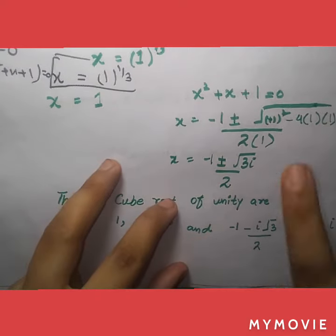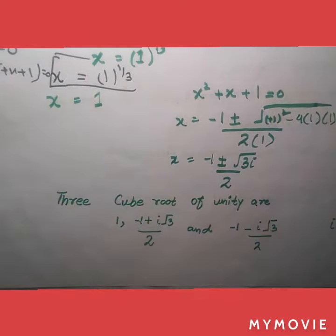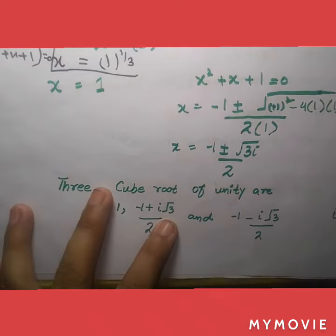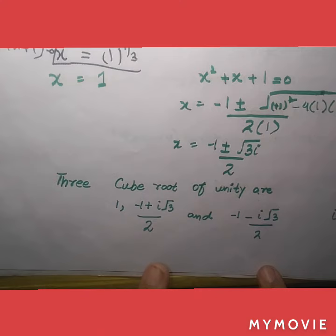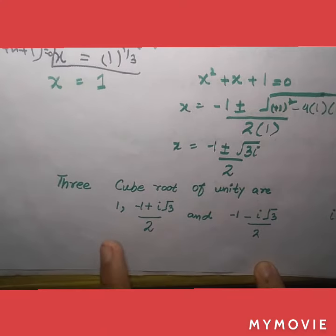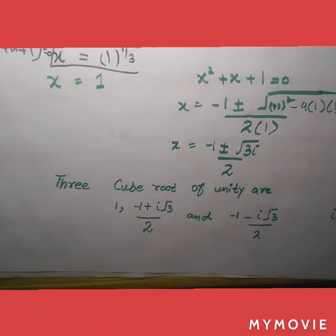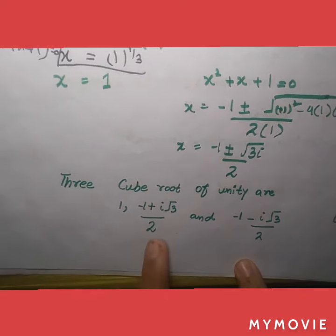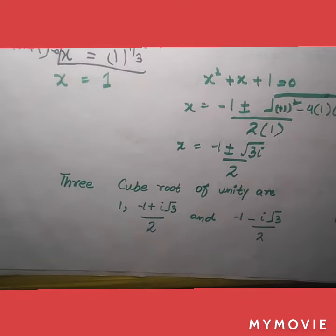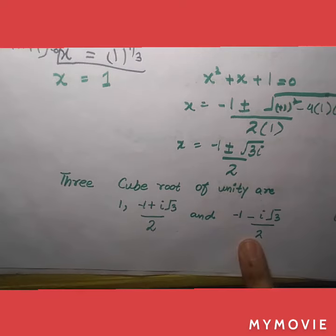You may check it and when we put it we found the values which are real or complex numbers. That's why the cube root has 3 roots. There are 3 cube roots of unity: 1, minus 1 plus iota root 3 by 2, and minus 1 minus iota root 3 by 2.